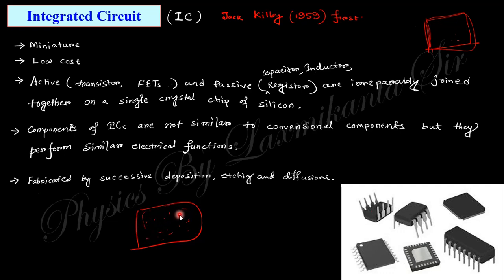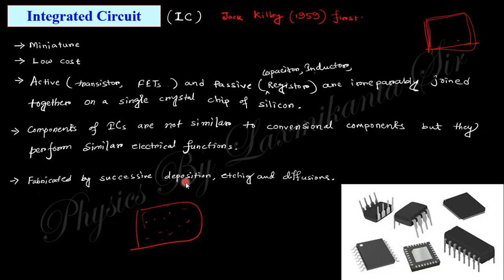If a single component within the IC is problematic, you must replace the total IC. Also, the components of an IC are not similar to conventional discrete components, but they perform similar electrical functions — for example, a diode in an IC behaves like a diode but is not the same physical component. ICs are fabricated by successive deposition, etching, and diffusion.